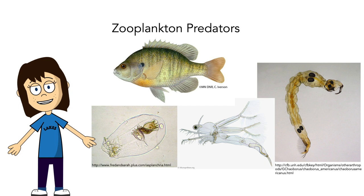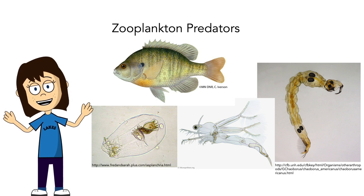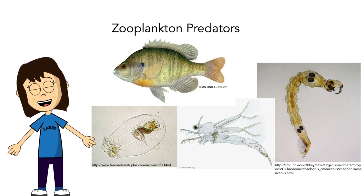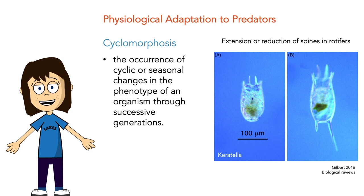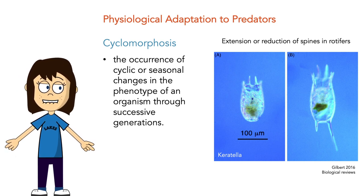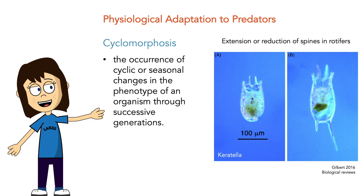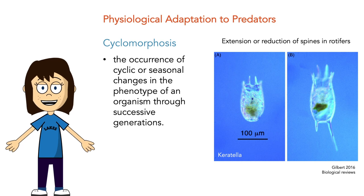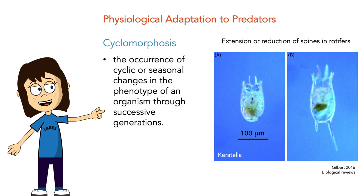While zooplankton are trying to grow and consume phytoplankton and keep our water clear, they're being predated on by a number of different organisms. Ecologists have long found it fascinating that zooplankton have physiological adaptations to predators, and we often see these adaptations happening during seasonal changes. We call these cyclical changes cyclomorphosis — the occurrence of cyclical or seasonal changes in a phenotype of an organism through successive generations. Here's an example of a rotifer that shows extension of spines, thought to ward off potential predators.